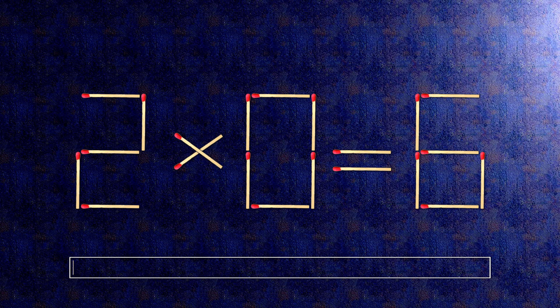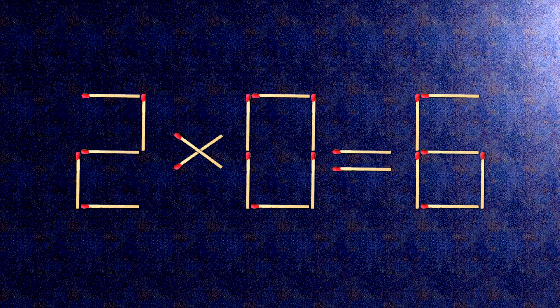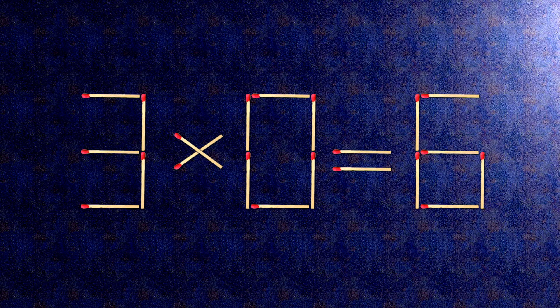Here is how this puzzle is solved. All we need to do is move this match right here and this match right here. Now, when we check the condition, 3 times 0 is 0. The task is done and the puzzle is solved.